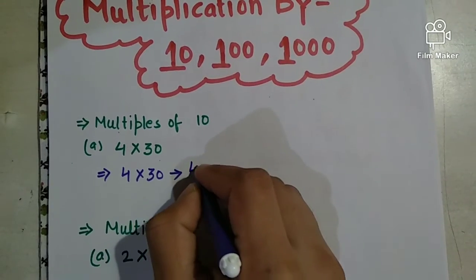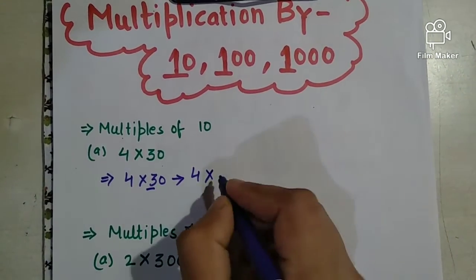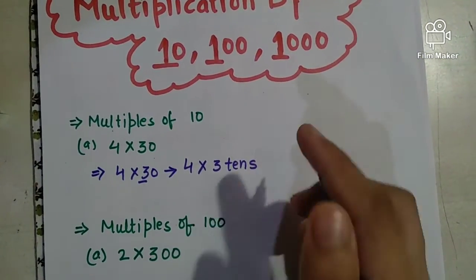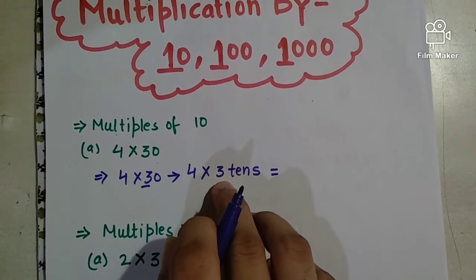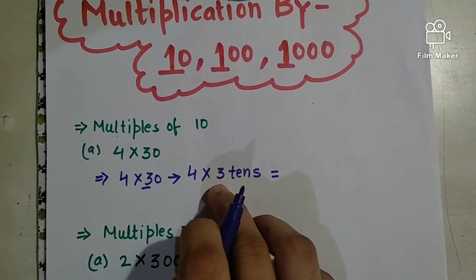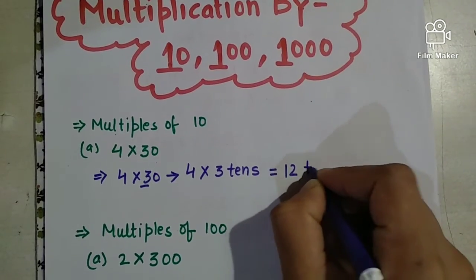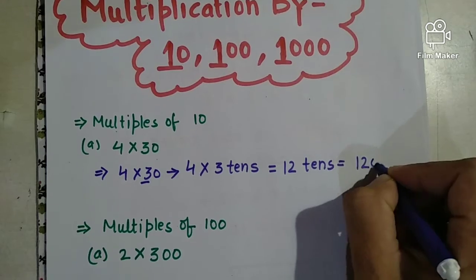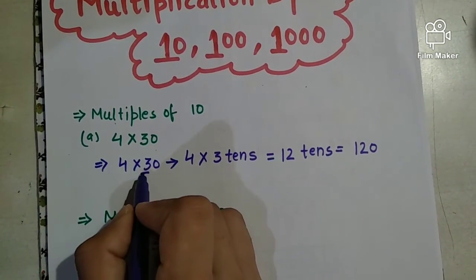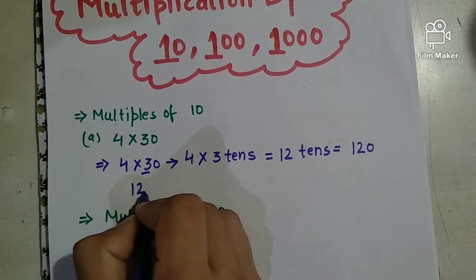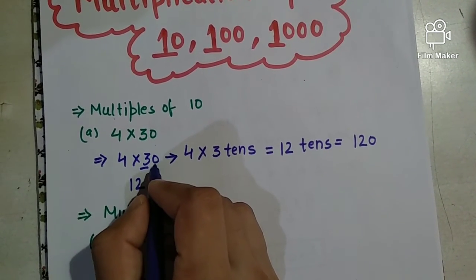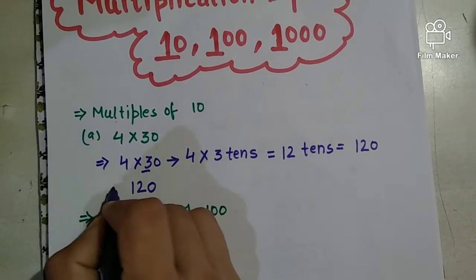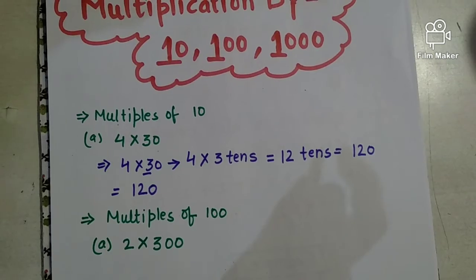We multiply four into three tens. Four threes are twelve, so we get twelve tens, which is one hundred and twenty. So if I multiply four into three, I get twelve, and then I add the remaining one zero to get the answer one hundred and twenty.